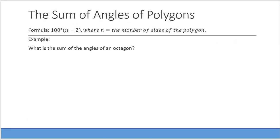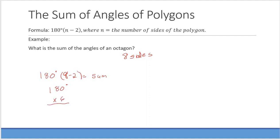Next we look at the sum of the angles of a polygon. The formula is 180 degrees times (n minus 2), where n is the number of sides. What is the sum of the angles of an octagon? An octagon has 8 sides, so: 180 times (8 minus 2) equals 180 times 6. 6 times 8 is 48, 6 times 1 is 6 plus 4, giving 1080 degrees as the sum of the angles.